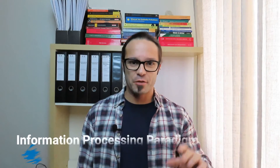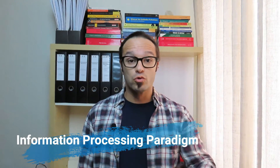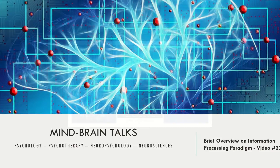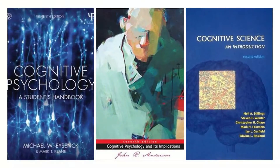Today we will talk about the information processing paradigm. We will look at the major models that shaped this paradigm and how it has impacted cognitive psychology. First, let me mention the books I recommend: the first is Cognitive Psychology: A Student's Handbook, the second is Cognitive Psychology and Its Implications, and the third is An Introduction to Cognitive Science.